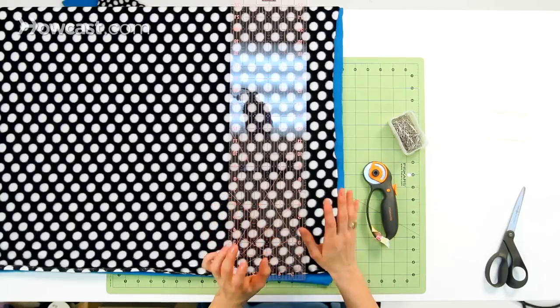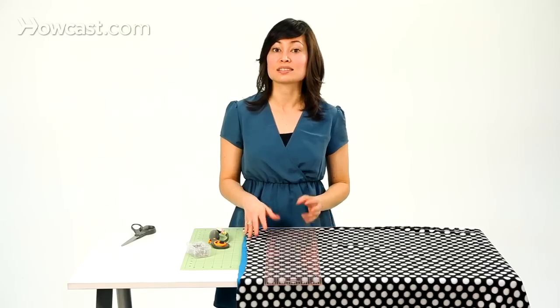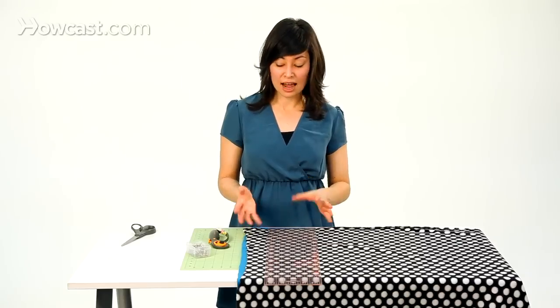Once you have the two pieces of your blanket cut about the same size, you need to trim them down so that they are pretty much exactly the same size. This will help in making the tie portion of the blanket.